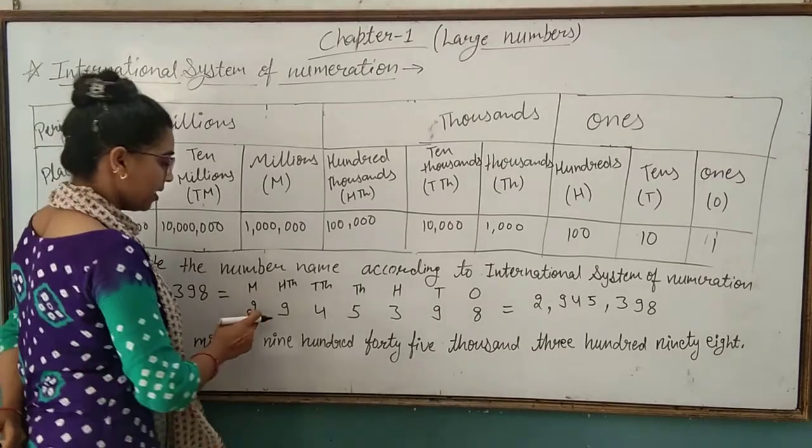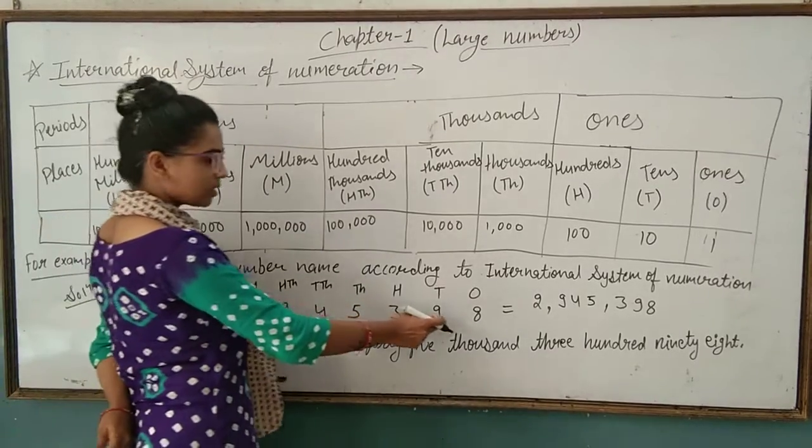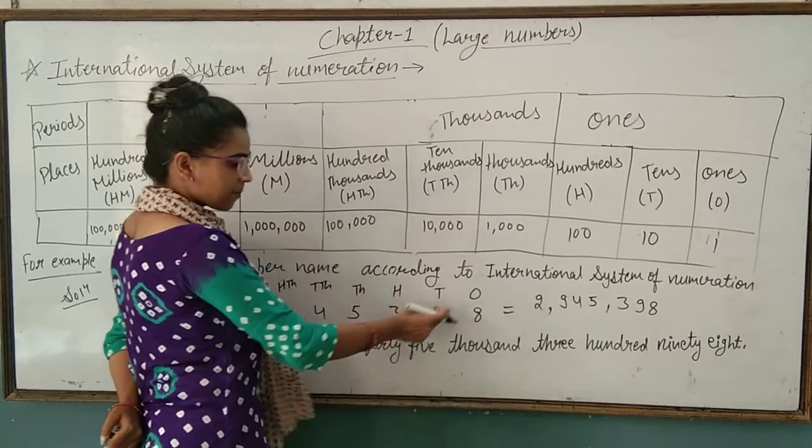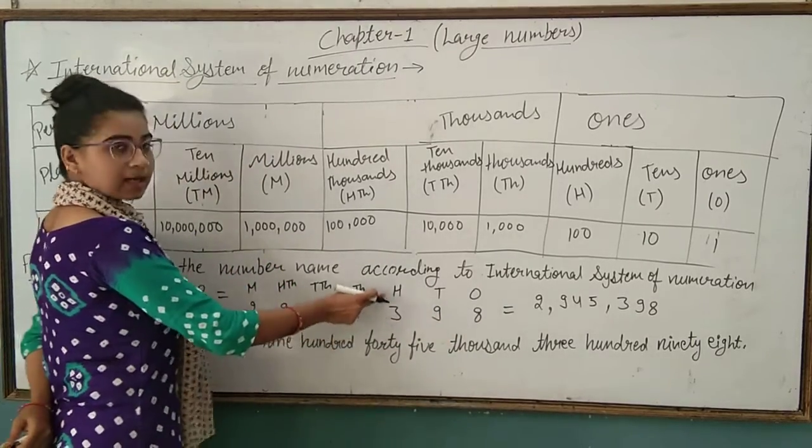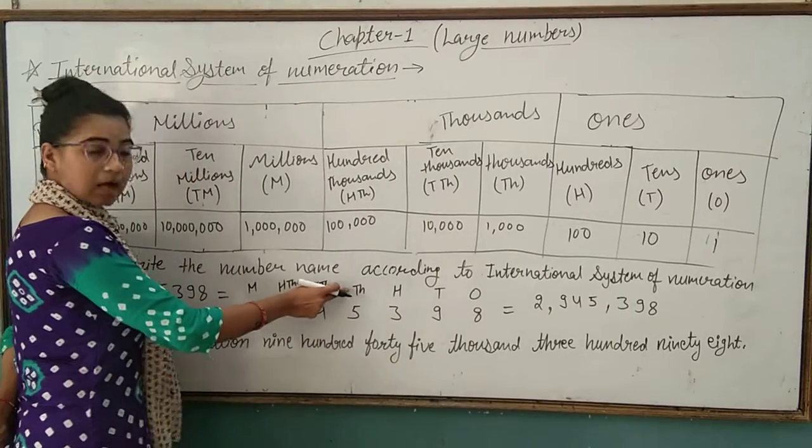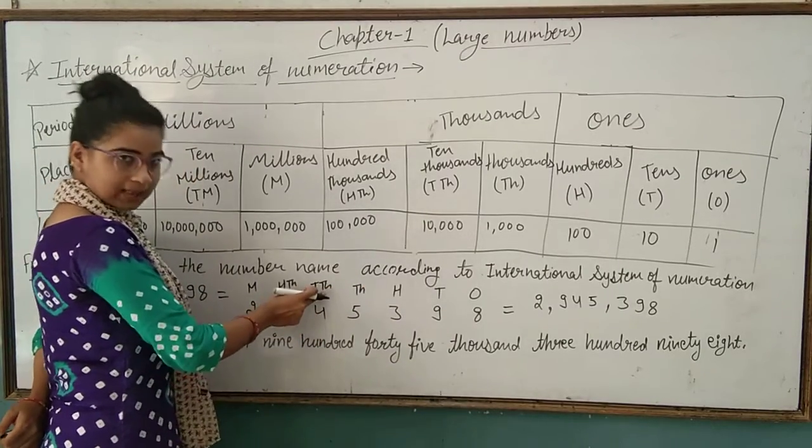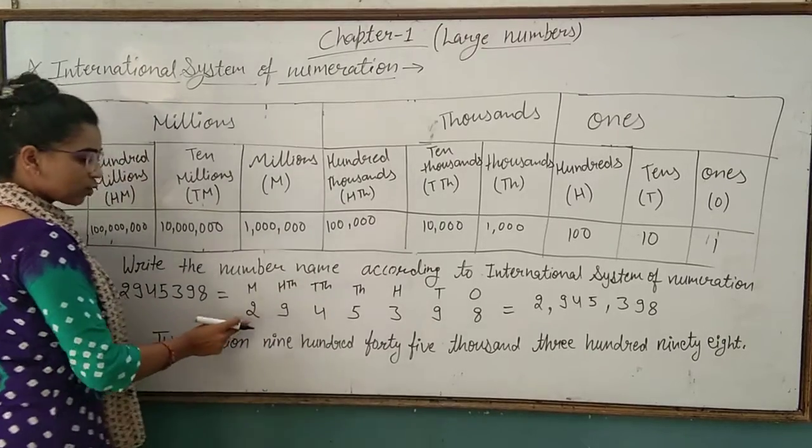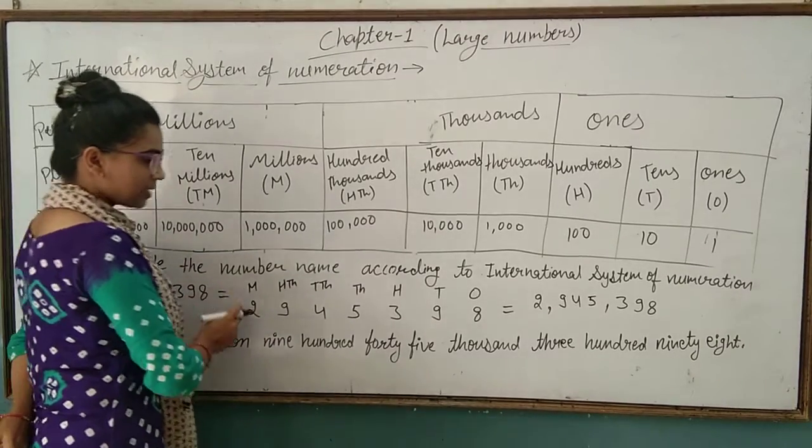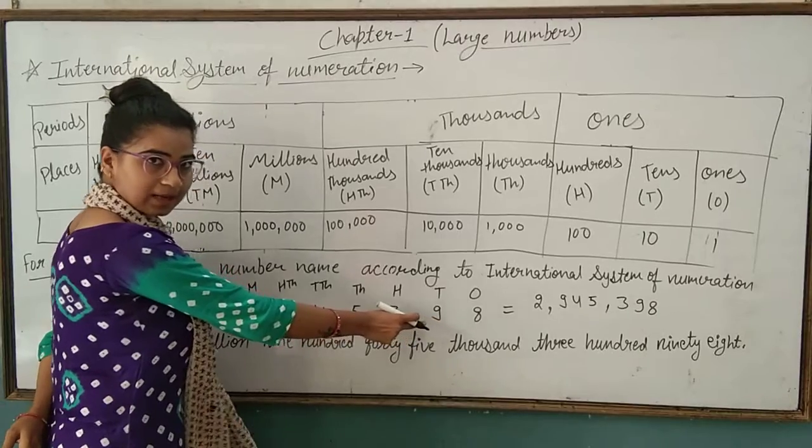8 is in ones place, 9 is in tens place, 3 is in hundreds place, 5 is in thousands place, 4 is in ten thousands place, 9 is in hundred thousands place, 2 is in millions place.